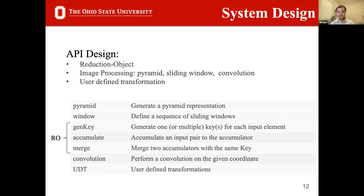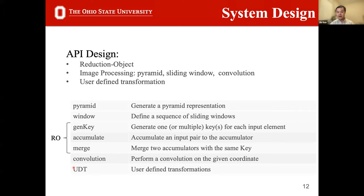To capture these applications, the reduction object interfaces are extended with three image-processing-specific functions. A pyramid function generates a pyramid of downscaled images from a given image and downscaling factor. A window abstraction defines a series of sliding windows within each image, and within each window an algorithm can be defined using the reduction object paradigm, automatically mapped to all available cores. A 2D convolution abstraction and user-defined transformations are also provided for compatibility.